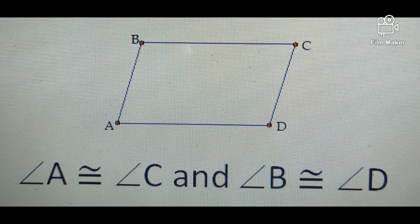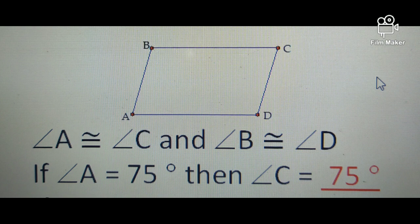In this figure, angle A and angle C are congruent and angle B and angle D are also congruent. The given is angle A which is 75 degrees. The question is the measure of angle C. So automatically, whatever the measure of angle A is will also be the measure of angle C. Because opposite angles have the same measurement.